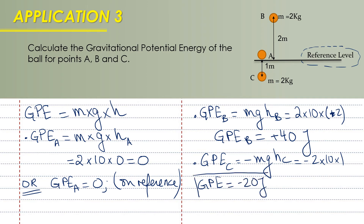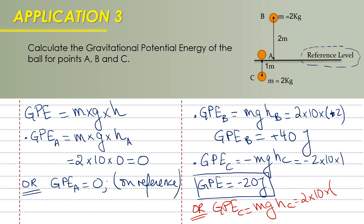A remark: you could also write GPE at C equals mg times hC, where hC is minus 1 meter, giving minus 20 joules. Both approaches are accepted. If the point is above the reference, GPE is positive; if below, GPE is negative. You may keep height as a positive value and add the sign to the equation, or use the signed height directly — both are correct.